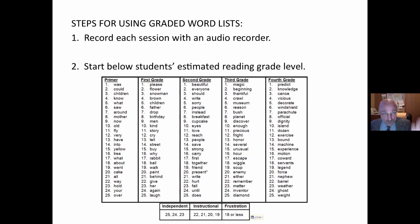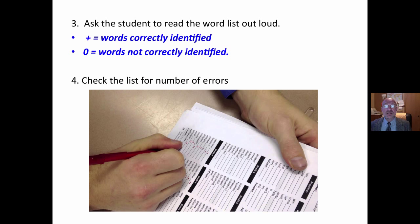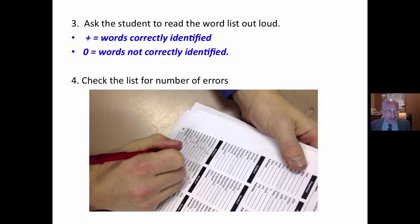We ask the student to simply read through the list of words. We have a copy of that same list in front of us. As the student reads, we put a plus for those identified correctly and a zero or a minus for those not correctly identified.